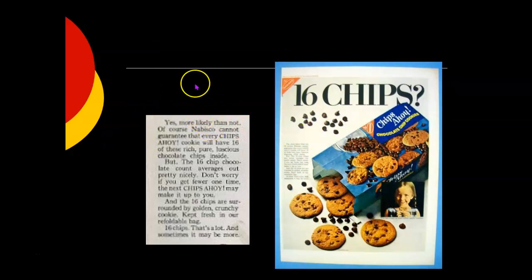16 chips? Yes, more likely than not. Of course, Nabisco cannot guarantee that every Chips Ahoy cookie will have 16 of these rich, pure, luscious chocolate chips inside. But the 16 chip chocolate count averages out pretty nicely. Don't worry, if you get fewer one time, the next Chips Ahoy may make it up to you. 16 chips, that's a lot. And sometimes it may be more.